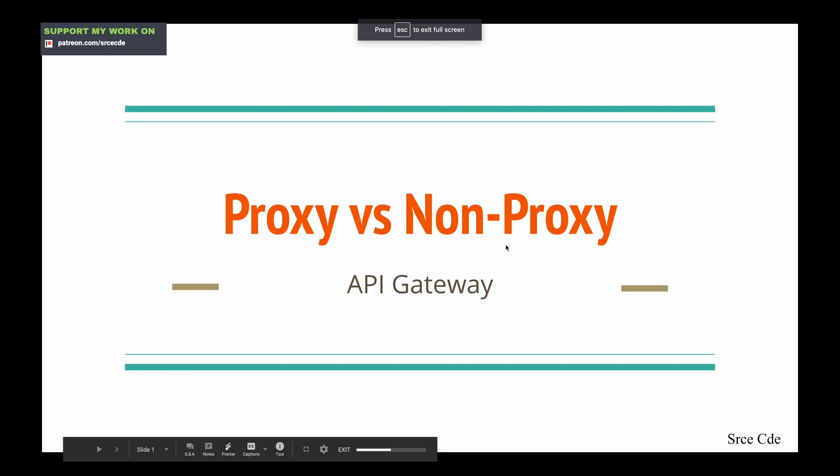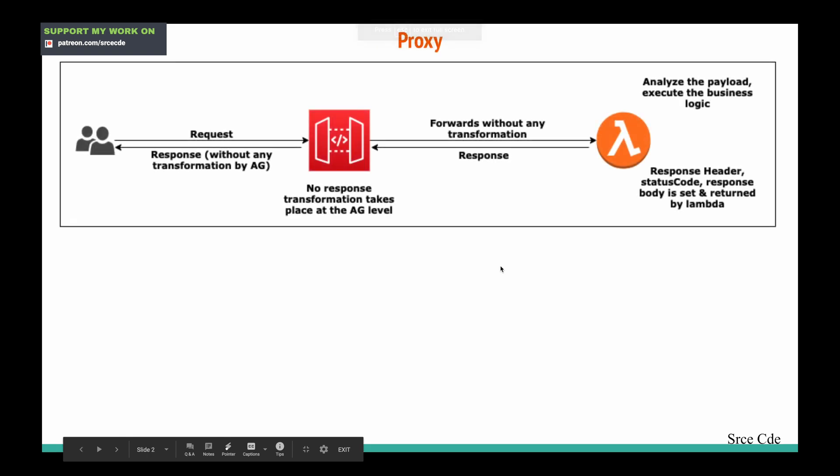Let's try to understand the overall flow of proxy integration and how it works. For example, we have an end user or any client who is invoking the API endpoint and sending some request data to the API Gateway. What API Gateway will do is simply forward that request data to the backend within proxy integration. API Gateway is not playing any role in any sort of transformation of the request data — it will simply forward that request data to the Lambda function.